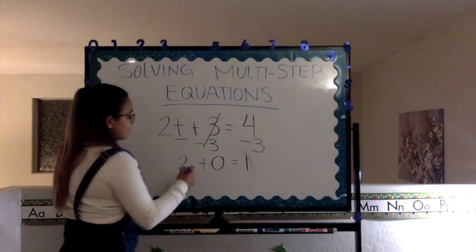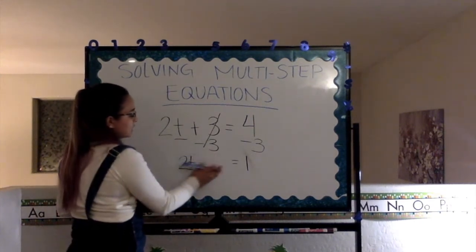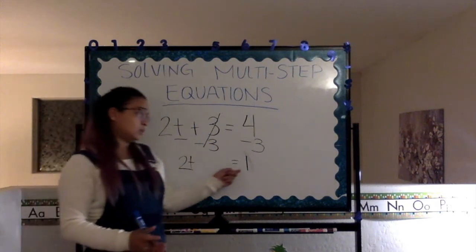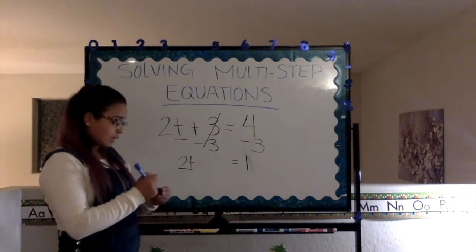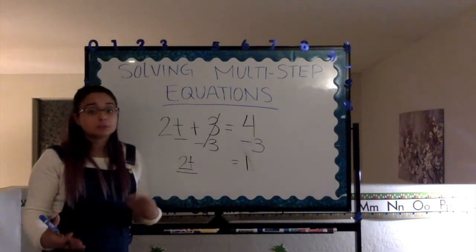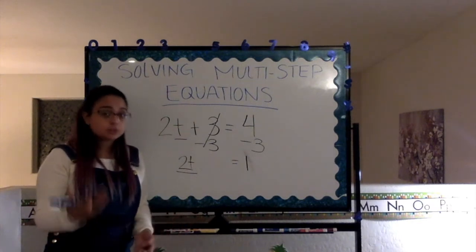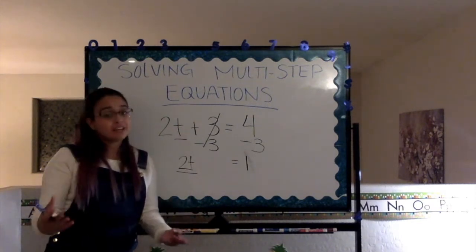Now, we're left with 2t plus 0. But, we can just take that out. We're left with 2t equals 1. Now, 2t is multiplication. So, we're going to be doing the opposite of multiplication. Which means that we will be dividing.